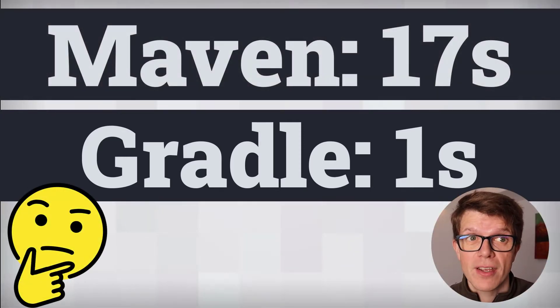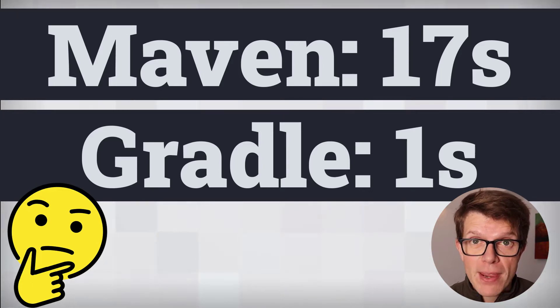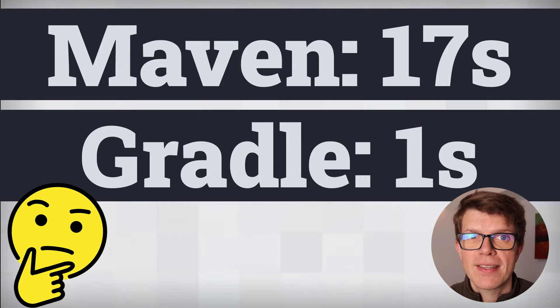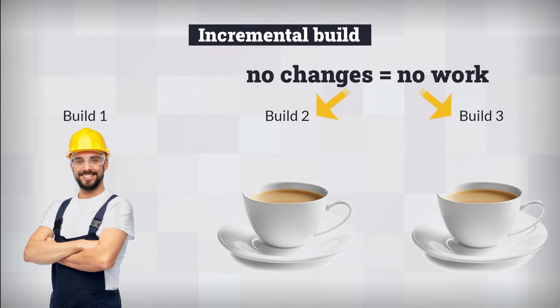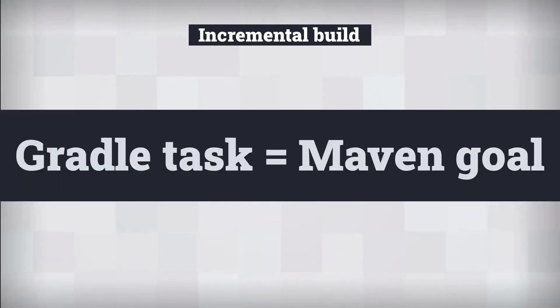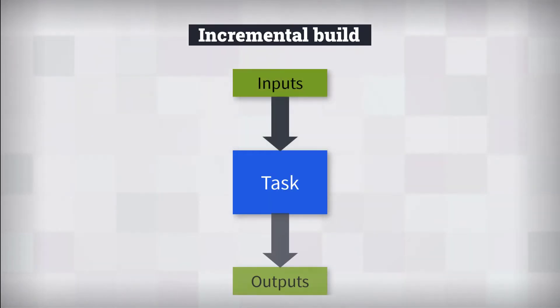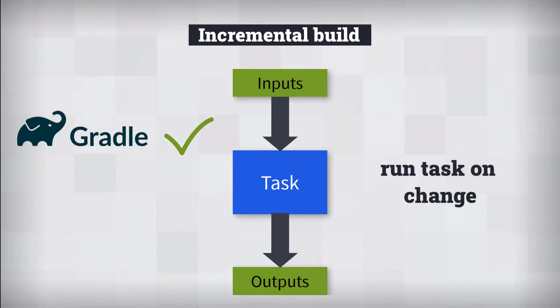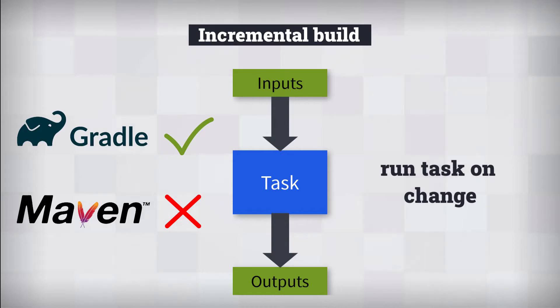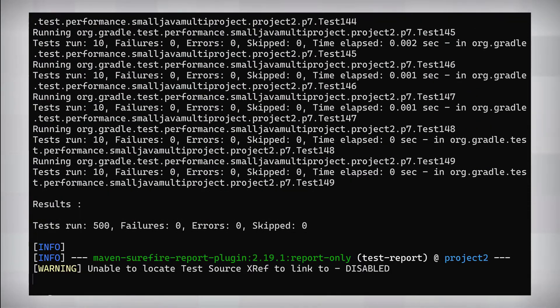So what's making Gradle faster? Gradle took a lot of inspiration from Maven but made some important optimizations. The biggest is incremental build, which means Gradle doesn't redo a task if nothing has changed. A Gradle task is the equivalent of a Maven goal — just a unit of work to execute in the build. Incremental build works for compilation, test execution, or any other task. Gradle tracks each task's inputs and outputs, and only reruns them when these change. Maven doesn't have anything so advanced — it attempts not to recompile unchanged code, but still runs all tests on every build, even when nothing's changed.